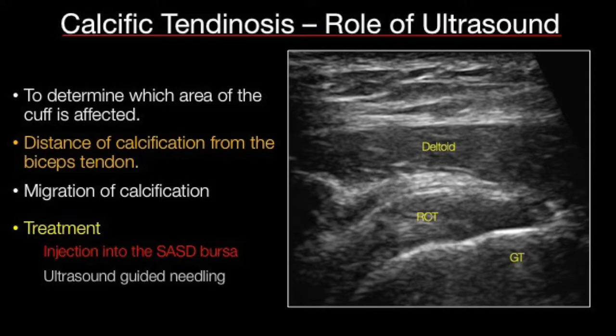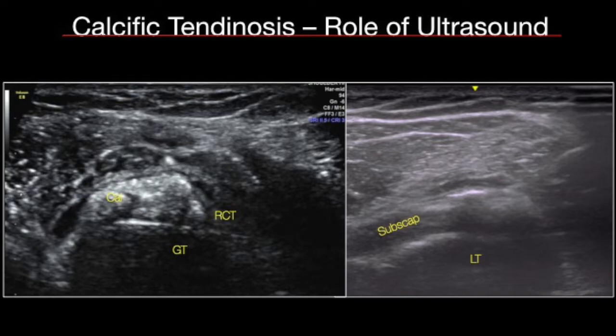Ultrasound will also tell you which types of calcium you can needle or aspirate. For instance, Type 1 calcium cannot really be aspirated, but Type 3 calcifications — you can just put in a needle and aspirate them easily.